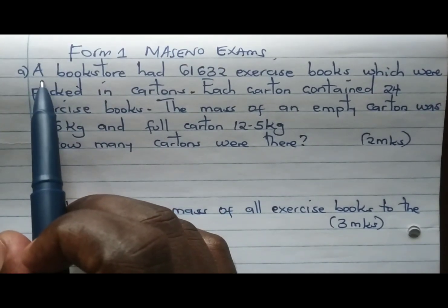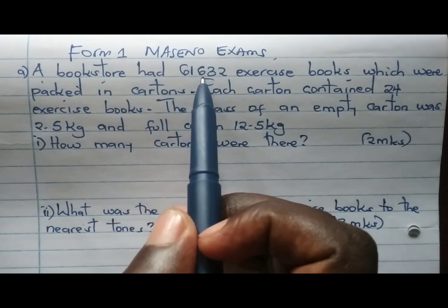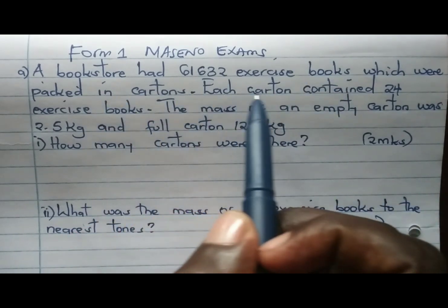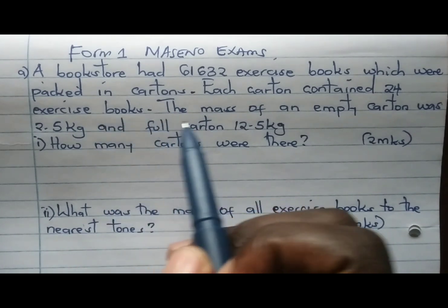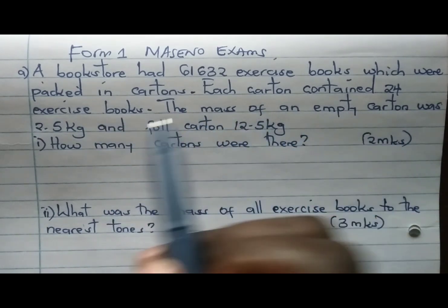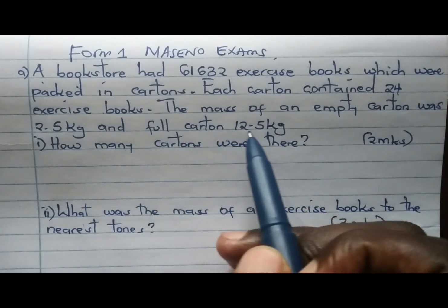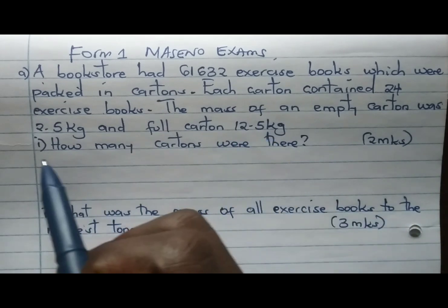Question reads: A bookstore had 61,632 exercise books which were packed in cartons. Each carton contained 24 exercise books. The mass of an empty carton was 2.5 kilograms and a full carton weighs 12.5 kg. Roman 1,